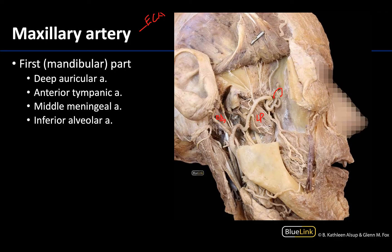The second branch is very close to the deep auricular and that is the anterior tympanic artery. You can see these are very small arteries right here in this region. The deep auricular will pierce the external acoustic meatus, whereas the anterior tympanic artery will actually pass through the petrotympanic fissure to get into the skull. Remember that the petrotympanic fissure is also how the chorda tympani will exit the skull to get to the infratemporal fossa.